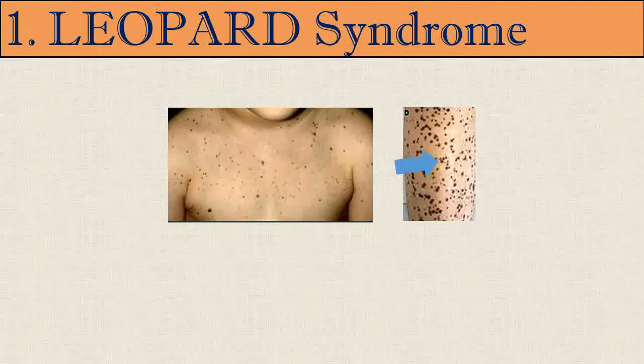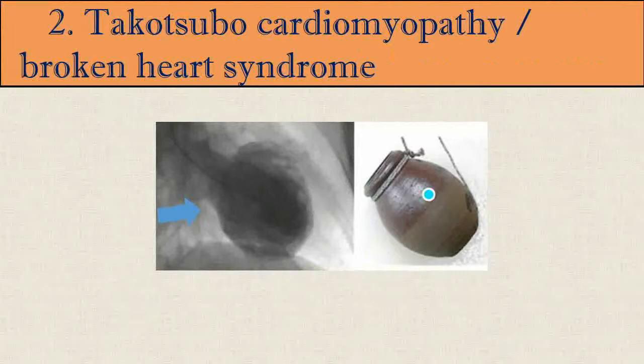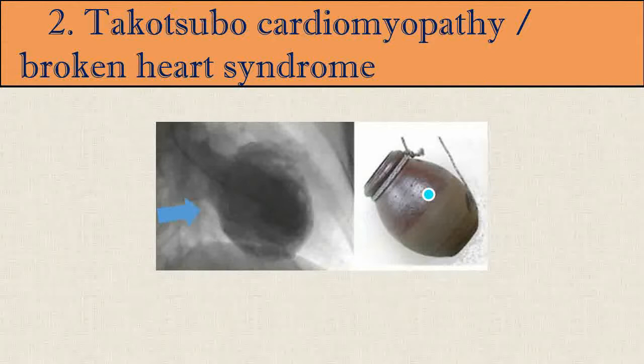The second disease is Takotsubo Cardiomyopathy, also known as Broken Heart Syndrome. The name 'Takotsubo' comes from the Japanese word for octopus trap, because the left ventricle of the heart takes on a shape resembling an octopus trap when affected by this condition. It is also known as stress cardiomyopathy.